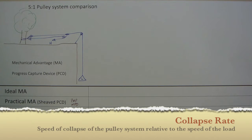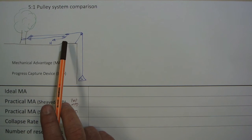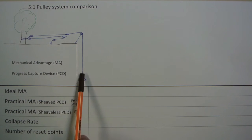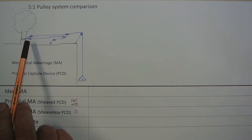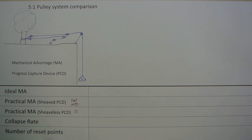Collapse rate — the definition is the rate or speed of collapse of the pulley system relative to the speed of the load. We'll talk about that more as we go. And the last criterion is number of reset points. In this example we've got one reset point: as we haul, the load comes up, the system becomes chock-a-block or fully collapses, and the progress capture device holds the load while we reset that one point.